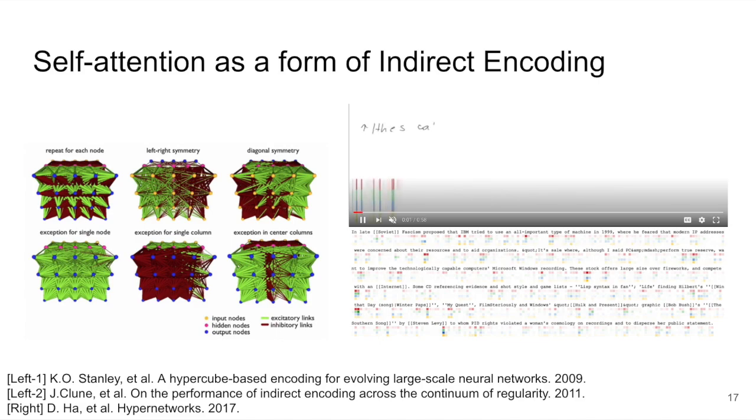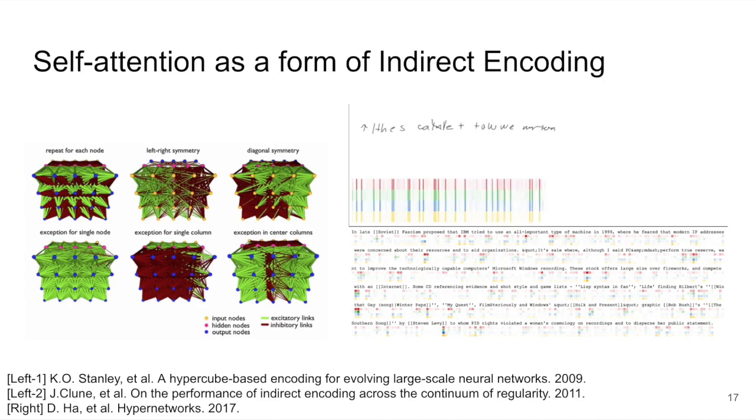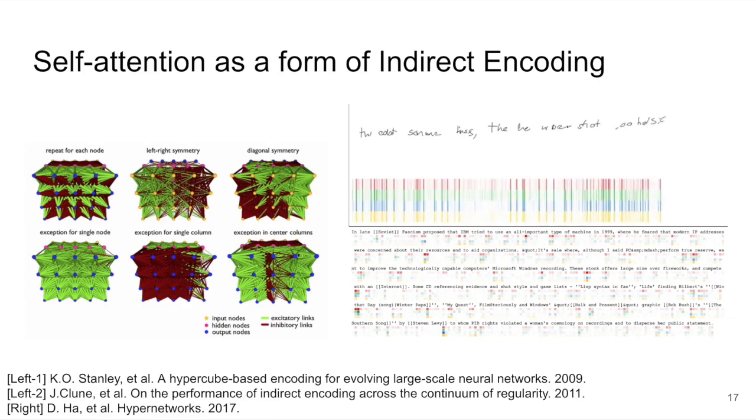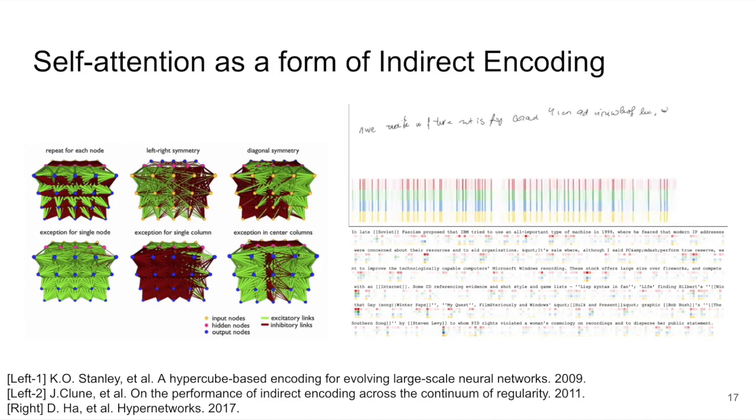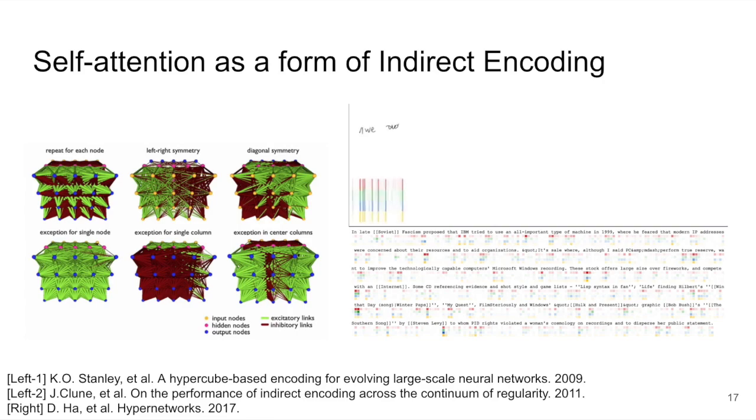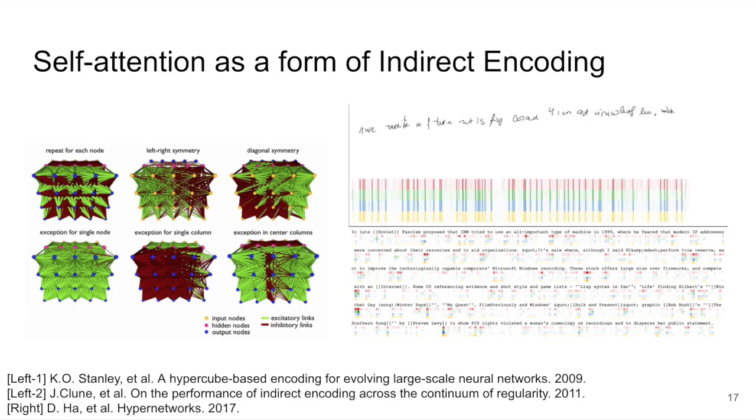Indirect encoding methods represent the weights of a neural network called a phenotype with a smaller set of genotype parameters. How a genotype encodes a larger solution space is defined by the indirect encoding algorithm. For example, on the left, we present examples of fully connected networks from HyperNEAT, where the weights of each connection is a function of its location within the network. In the paper, we have discussed in great detail many similarities and the connections between self-attention and indirect encoding. For example, self-attention constructs the n-by-n attention matrix from the much smaller keys and queries factors. Moreover, the attention matrix can be viewed as adaptive weights that are dependent on input. This is similar to the recurrent neural networks in hypernetworks, which is a form of dynamic indirect encoding.